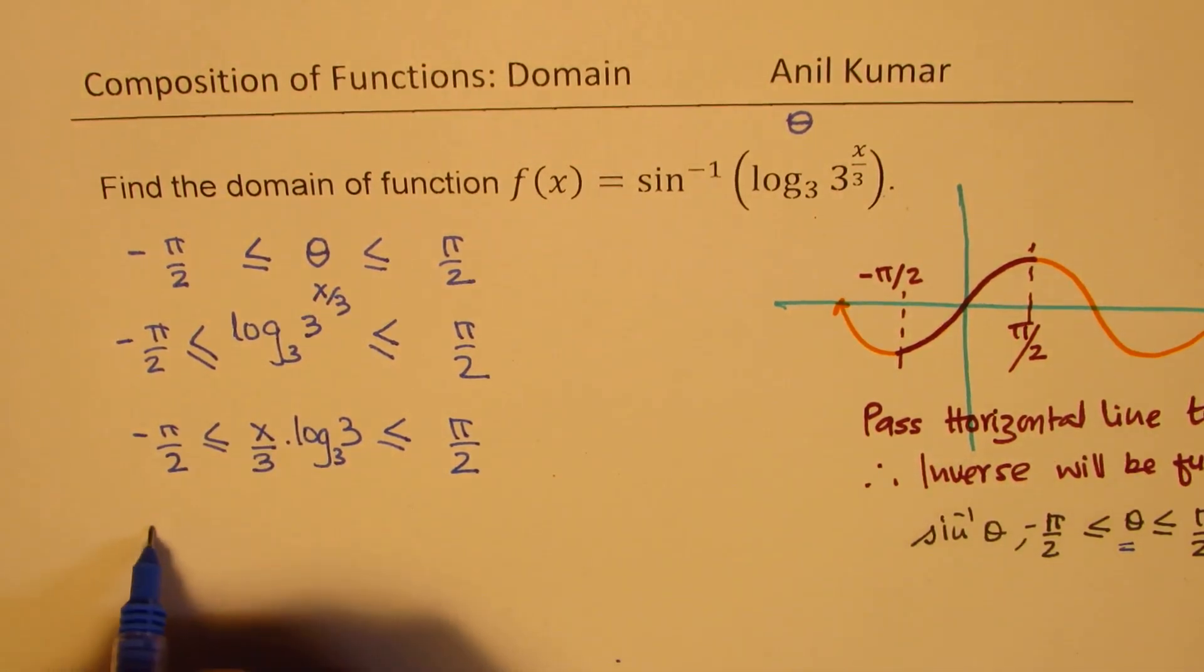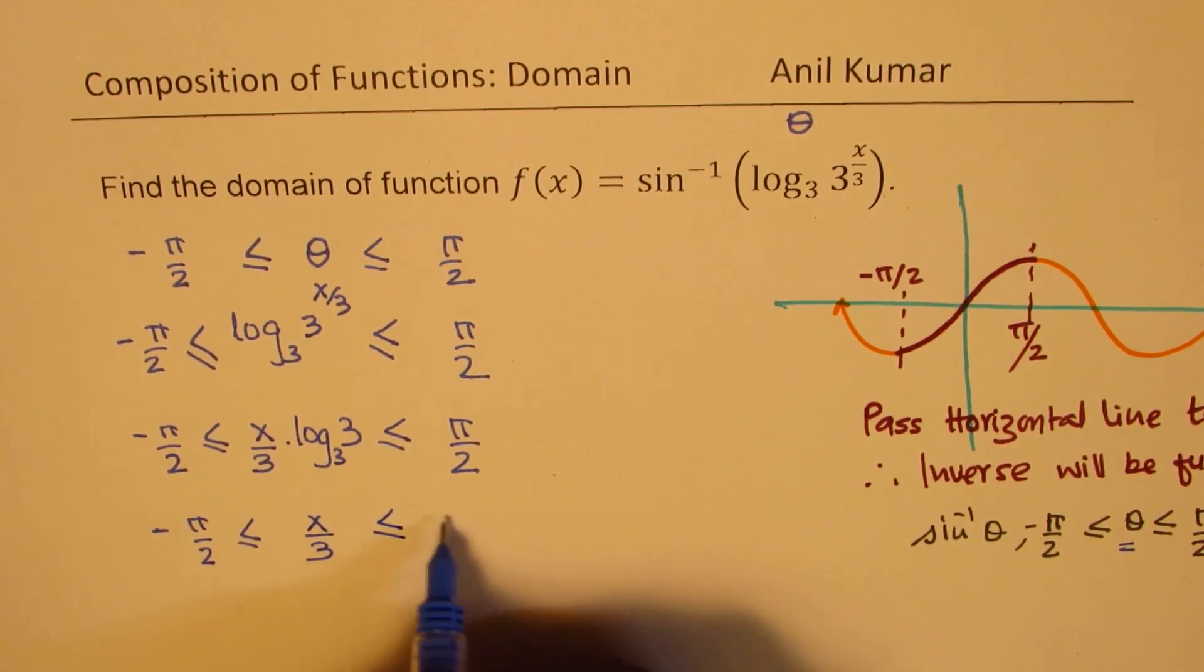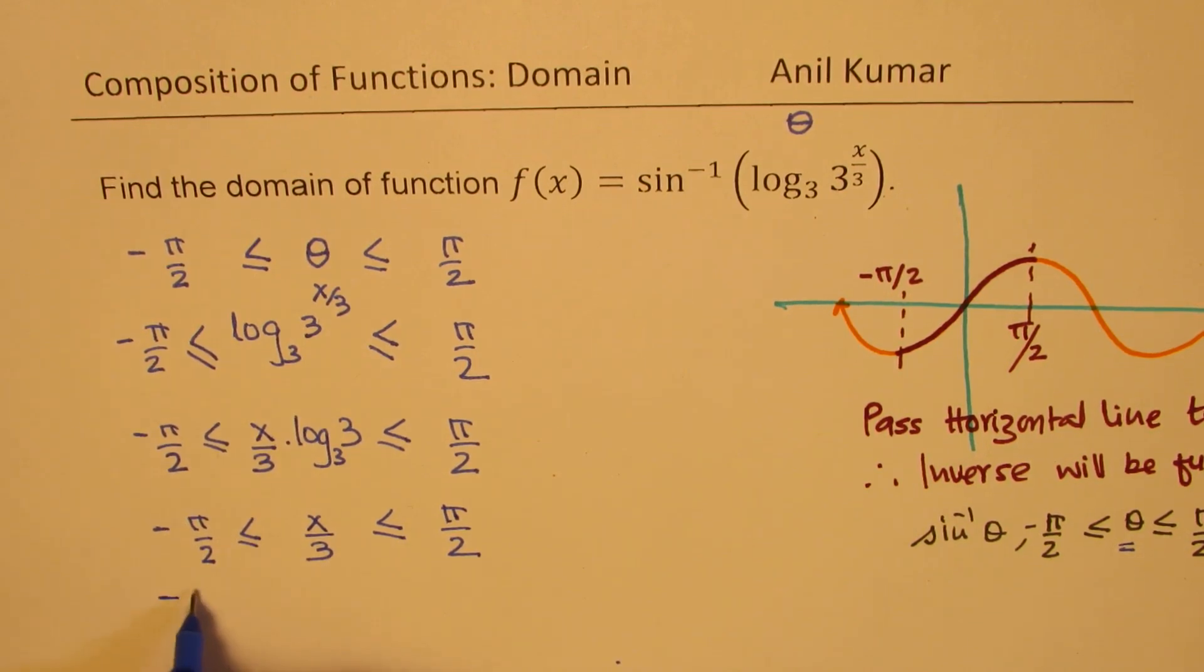Now this is x by 3. So we can write this as minus pi by 2 is less than or equal to x by 3, which should be less than or equal to pi by 2. Now multiplying by 3, we get our results between minus 3 pi by 2 to plus 3 pi by 2.